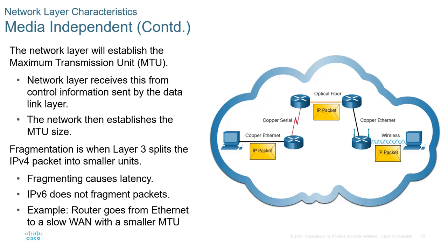Often the network will establish the appropriate MTU size so that all media throughout the network uses the same size. Realistically, 1500 bytes is the standard MTU size — it can be slightly bigger or slightly smaller, but by default MTU is about 1500 bytes.